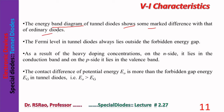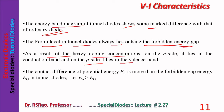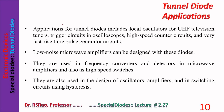Regarding energy band diagrams, the energy band diagram of tunnel diodes shows marked differences from that of ordinary diodes. The Fermi level in tunnel diodes always lies outside the forbidden energy gap — an important point. As a result of heavy doping concentration, on the n-side it lies in the conduction band, and on the p-side it lies in the valence band, not in the forbidden energy gap. The contact difference of potential E₀ is more than the forbidden gap energy Eg.